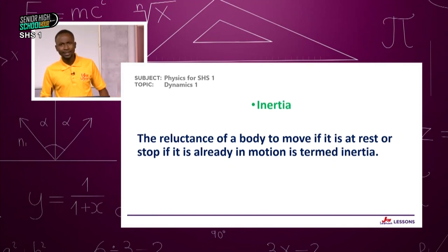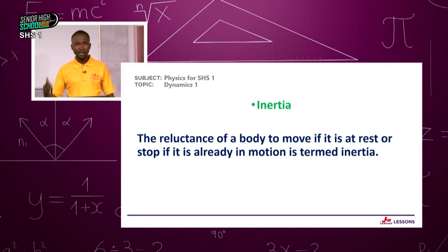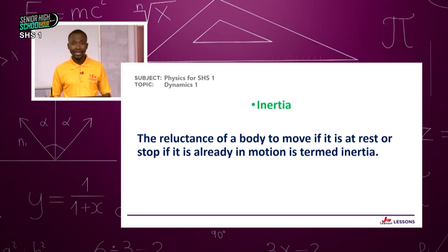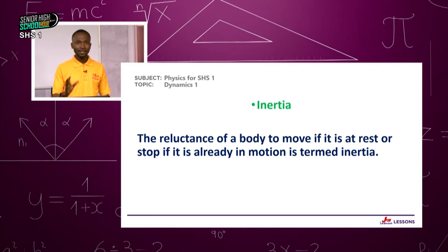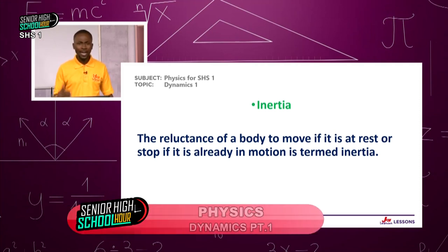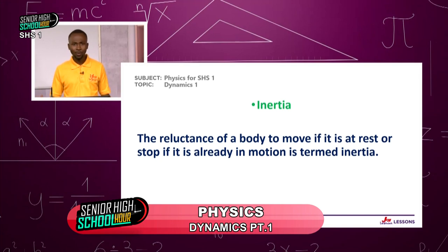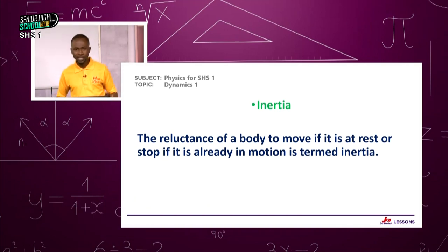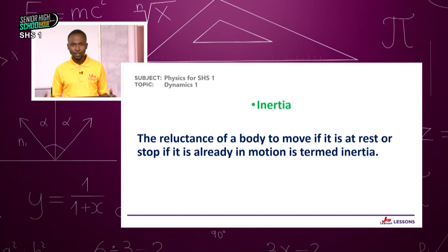Let's take this scenario: you have a car parked, and the driver has put the car in neutral. You try to push the car, but the car is not moving — it is offering a resistance to motion. Similarly, you have a sofa at home; you try to push it to retrieve something that fell under it, and it is not moving. That means it is offering a resistance to motion. That is what we call inertia.